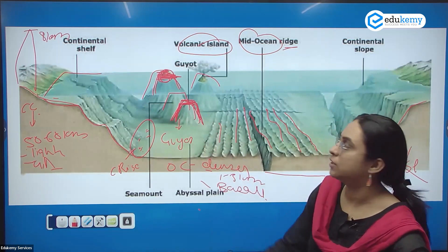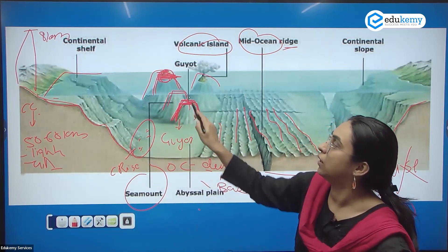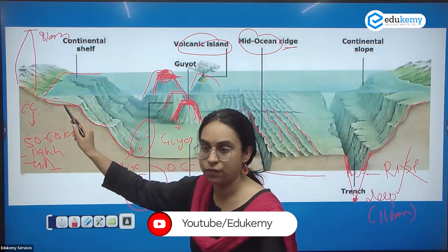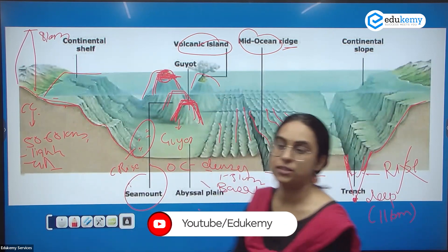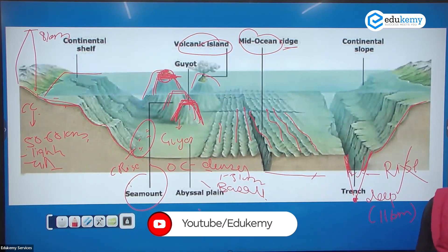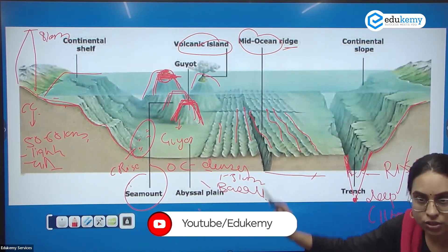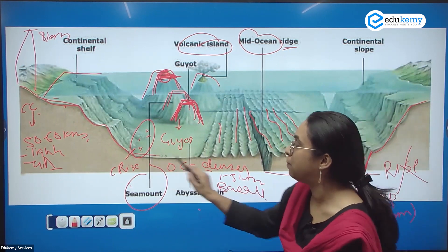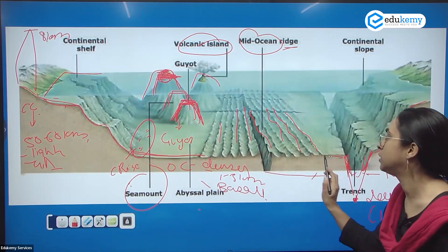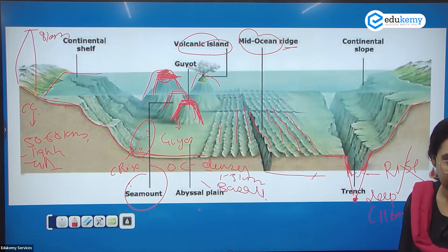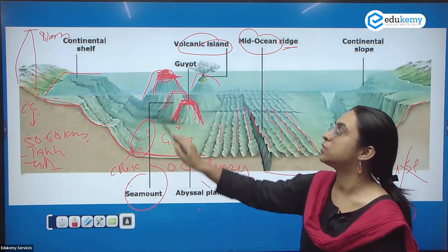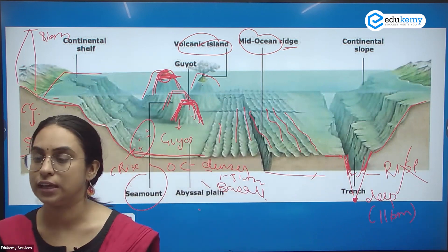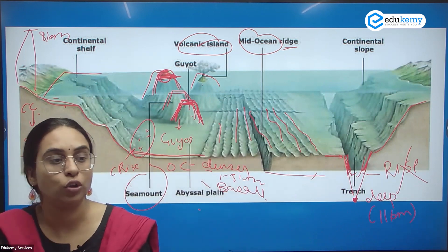So in the oceans we have: continental shelf, continental slope, continental rise, trenches, mid-oceanic ridges, the abyssal plain or deep ocean plains, volcanic islands, sea mounts, and guyots. This is your ocean bottom relief.